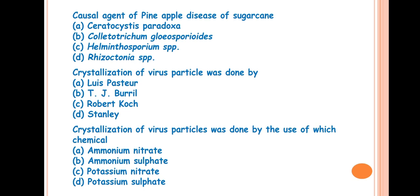First one is causal agent of pineapple disease of sugarcane is? The answer is Ceratocystis paradoxa. The pineapple disease of sugarcane is a soil borne disease that is caused by a fungus, Ceratocystis paradoxa. Why it is named as pineapple disease? Because when this pathogen infects the sugarcane sets, the rotting of sugarcane sets occur, which produce a scent or odor that is similar to the scent of ripened pineapple. That's why this disease is called pineapple disease.